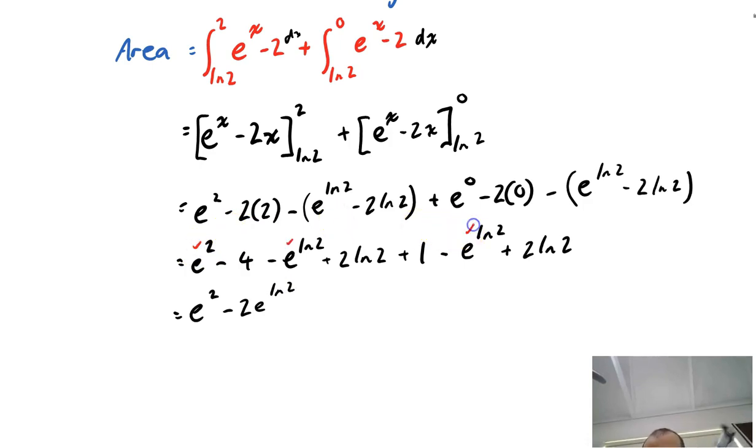Tick, tick, tick. I have a 2ln2, a 2ln2, so that's plus 4ln2, tick and tick,